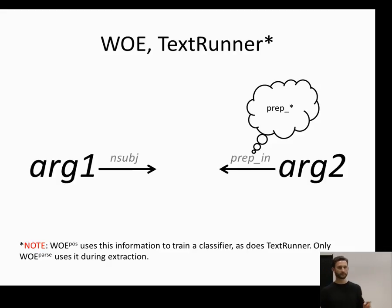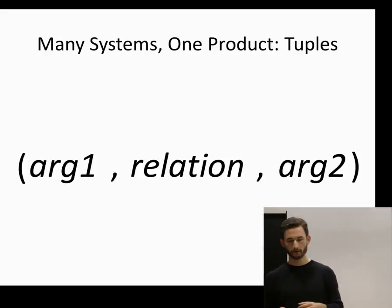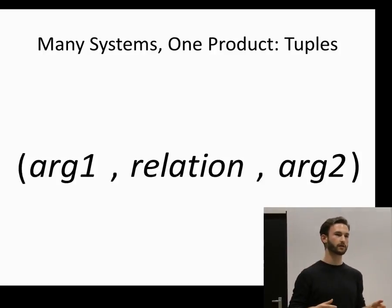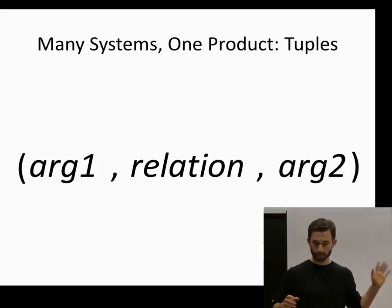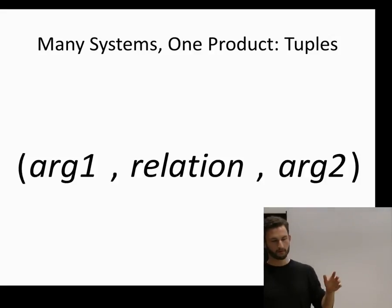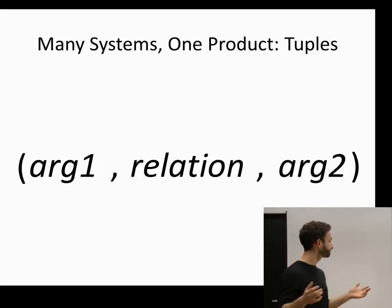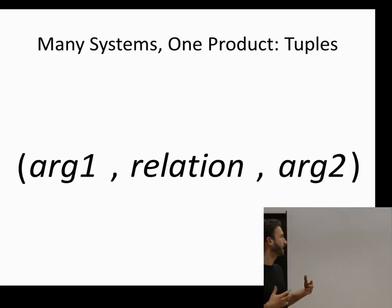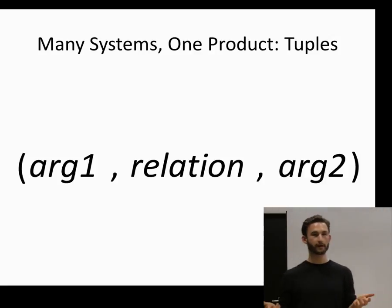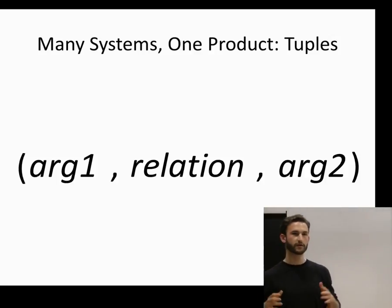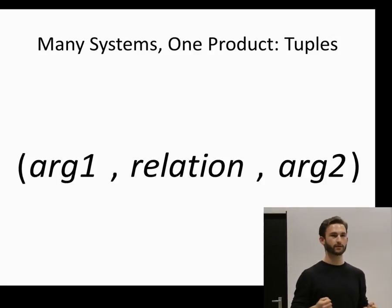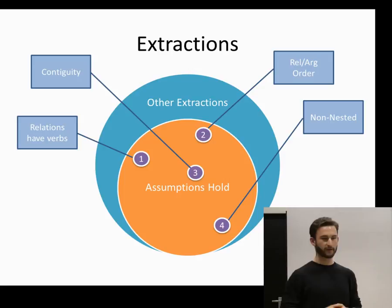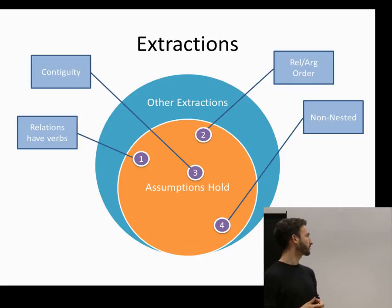I'll come back to this when I talk about how OLLI does something similar. Both of these strategies make assumptions about relations and how they're structured and encoded in sentences. Both systems output tuples, which demonstrate these assumptions: first, they're all binary; and second, the relation is always situated between the two arguments. Sometimes they're even called triples, which underscores the idea that we're talking about three things.